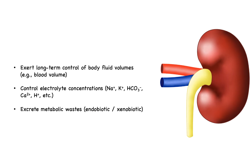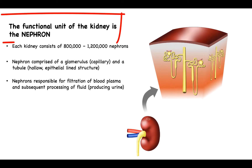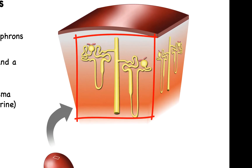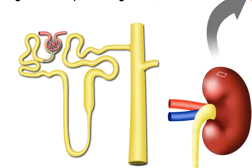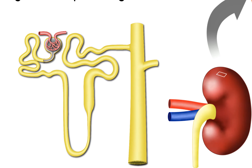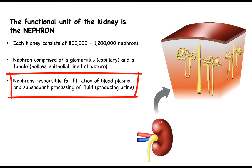In order to understand how the kidneys accomplish these functions, you have to appreciate the function of the nephron. A nephron is the functional unit of the kidney — you can think of the kidneys as a collection of nephrons, approximately a million nephrons per kidney. A nephron has two main structural components: the glomerulus, which is the capillary component, and the tubule, which is a hollow epithelial-lined structure. The basic purpose of the nephron is to first filter blood plasma and then process that fluid, ultimately converting it into its final urinary product.